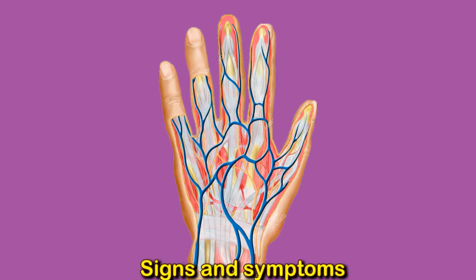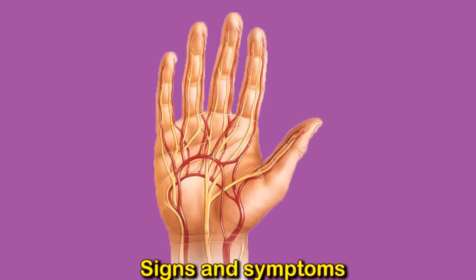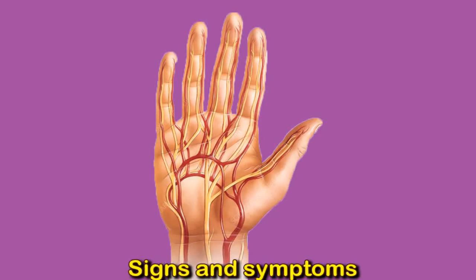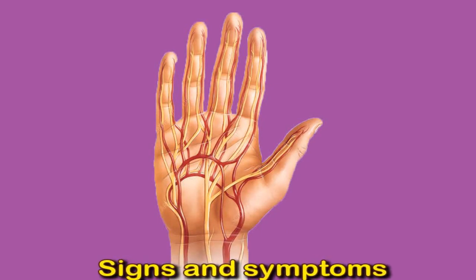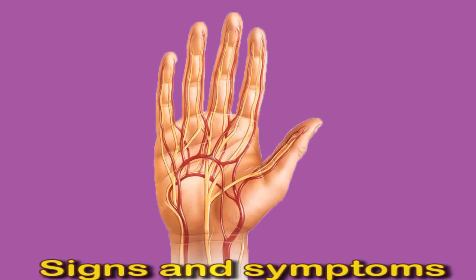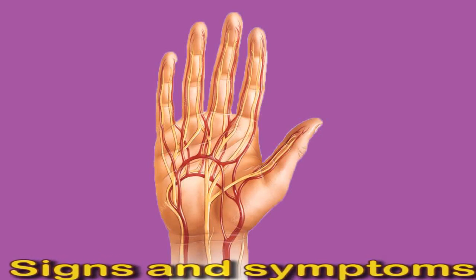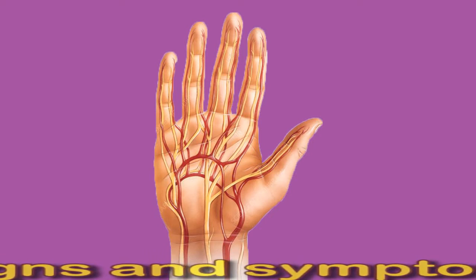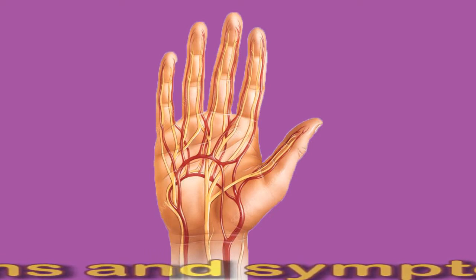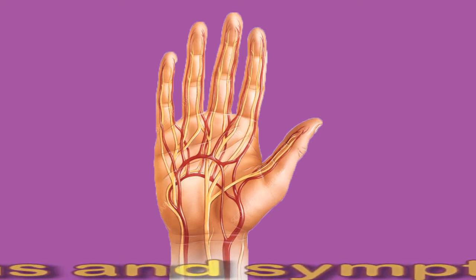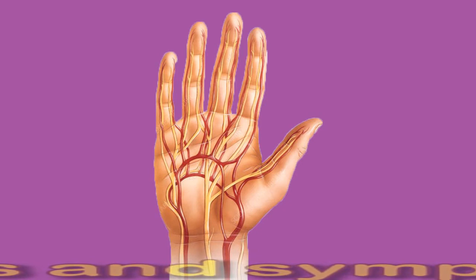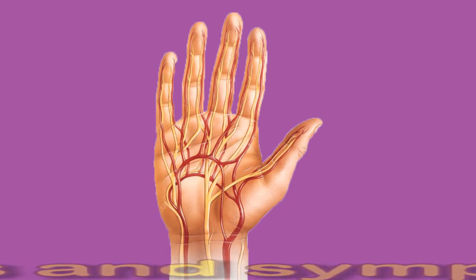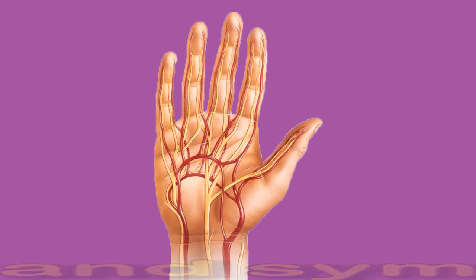Blood refilling — blood vessels may take longer to fill with blood. For example, after squeezing a finger, it may take longer than 30 seconds to refill with blood. Mobility — a person may have some difficulty moving the fingers. Pain — severe pain in the hands and fingers may signal poor blood flow.